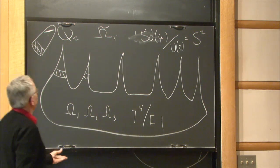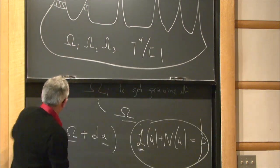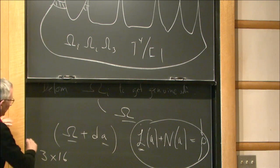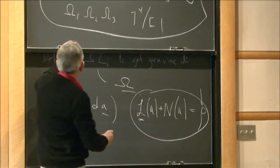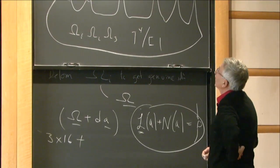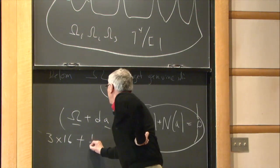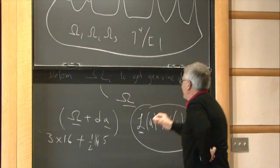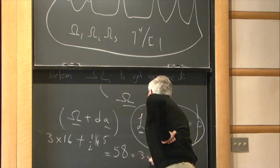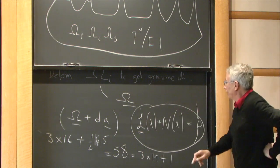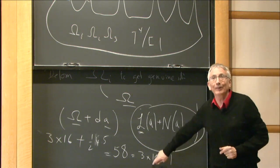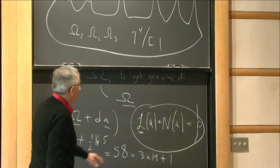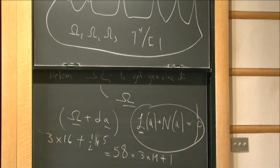Let's count up the dimensions in the torus case. The parameters are: three parameters for each of the 16 points (one scale and one rotation parameter from the S²), plus the space of flat Riemannian four-tori, which has dimension ½ × 4 × 5 = 10. That gives 3×16 + 10 = 58. This is 3×19 + 1, agreeing with our assertion about the dimension of the moduli space of K3s from the Grassmannian perspective — the 1 coming from the volume form.